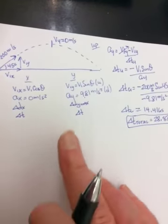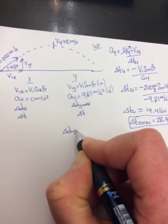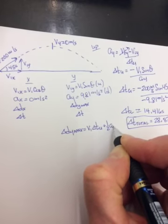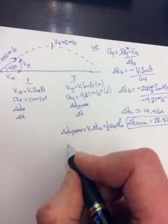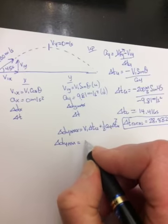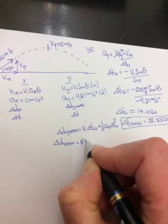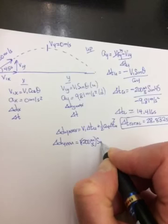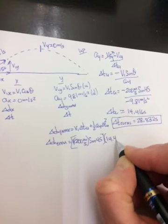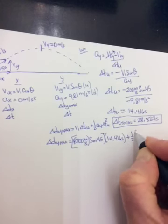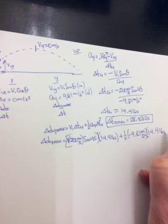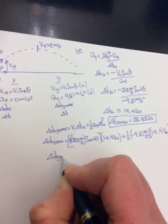Part b wants to know maximum height. So maximum height is delta d_y max, which equals vi delta t_u. You have to use the half time to get the maximum height because that's when the maximum height occurs. So delta d_y max equals vi sin theta, which was 200 meters per second, sine of 45.